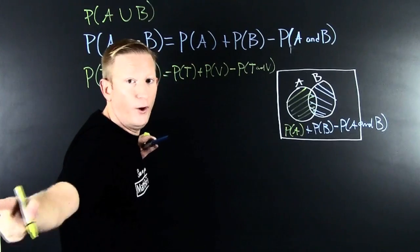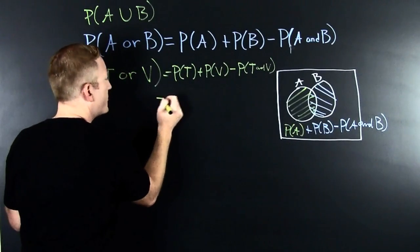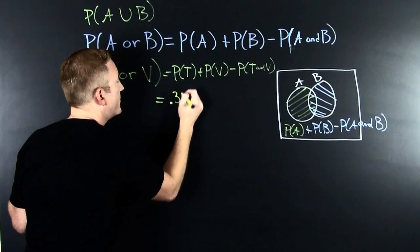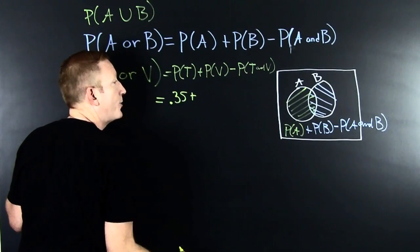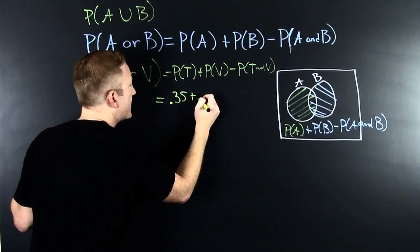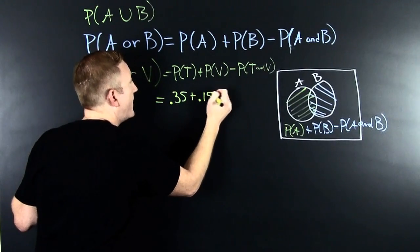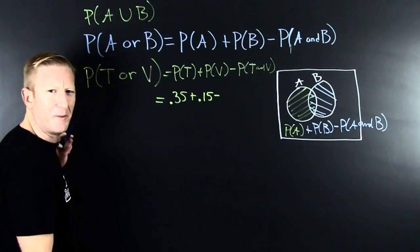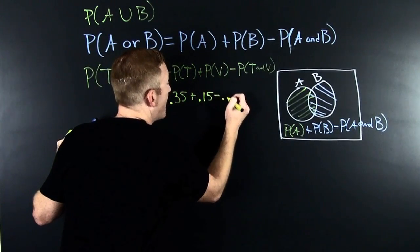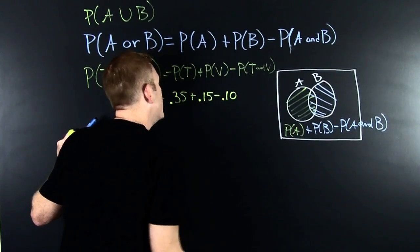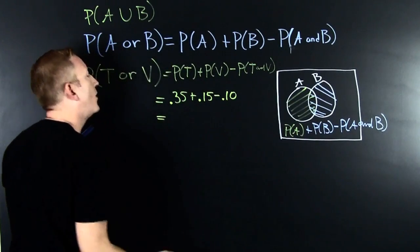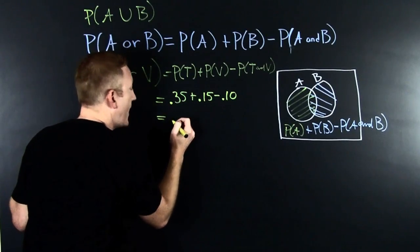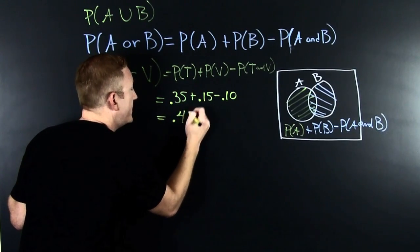We throw that information in. The probability that she's going to get a ticket is 0.35, plus the probability that she's going to get vandalized is 0.15, minus the probability that both happen — what a bad day — which is 0.10, or 10% of the time. We add and subtract and you have 40%.